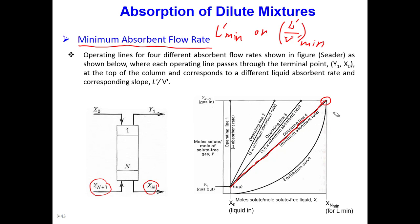We cannot go lower than this liquid flow rate, because if we go lower, we will cross the equilibrium line — and that is not acceptable, because it violates thermodynamic law. Temperature always goes from higher to lower, pressure from higher to lower, and for mass transfer, mass goes from higher concentration to lower concentration. If the operating line cuts and crosses the equilibrium line, it's as if mass is going from lower to higher concentration, which is thermodynamically impossible.